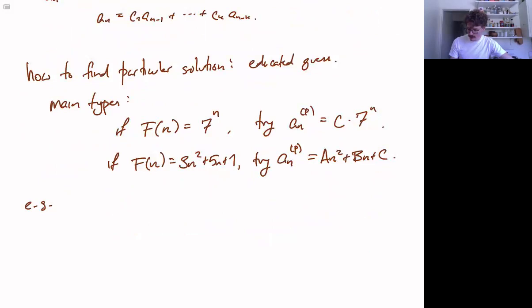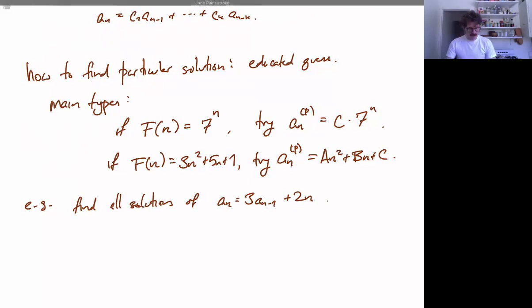So let's see an example of this. So let's solve. Let's say you can find all solutions of the recurrence relation a n equals 3 a n minus 1 plus 2 n. And, okay, yeah, let's leave it at that. So as we can see, this is exactly the kind of equation or recurrence relation that we were talking about. It is linear, but non-homogenous.